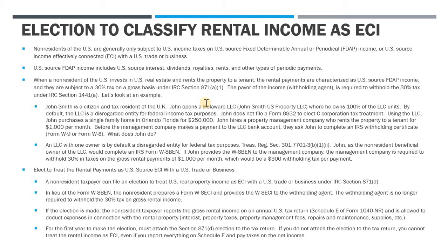The specific code section is 871 — Section 871(a)(1) states that when a non-resident receives U.S. source FDAP income, they are subject to a tax of 30% on that gross amount. The obligation to withhold this tax falls on the withholding agent under Section 1441(a). This rate of 30% can be reduced by a treaty, but for purposes of this exercise we're focusing on the ECI election under 871(d).